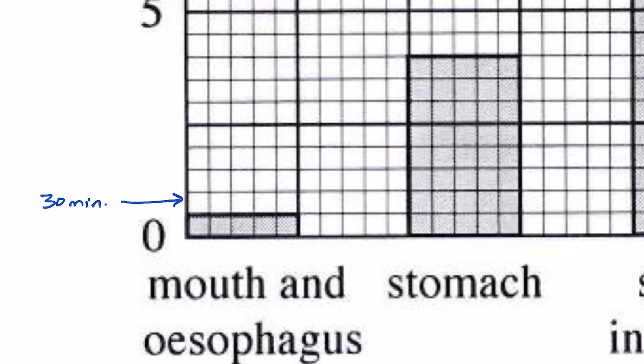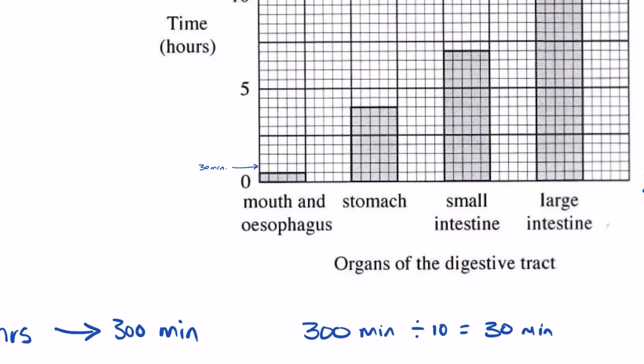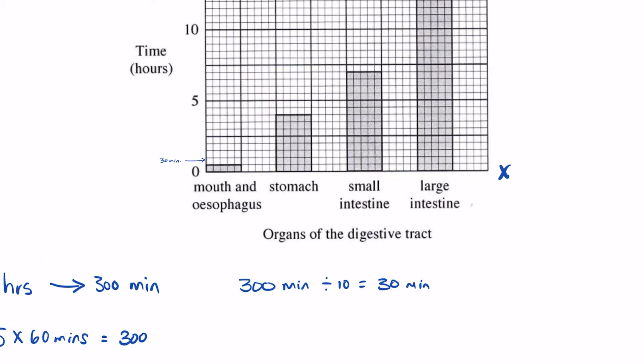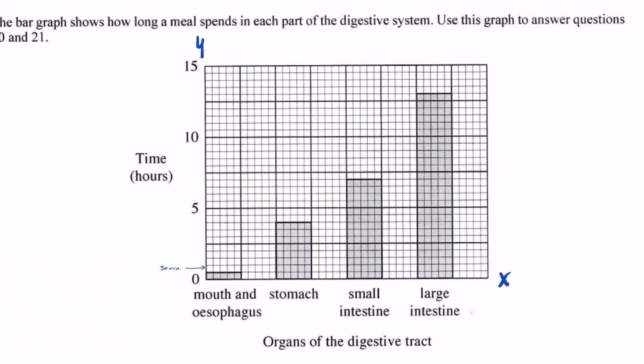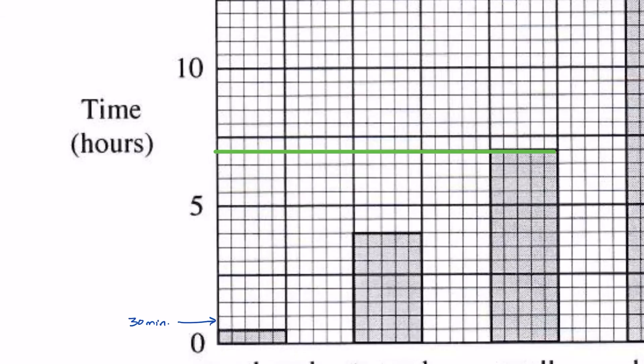Let's look at the time spent in the small intestine. If we go to the top of the bar, we can draw a line that takes us across to the y-axis. And we see it lands right about there. And now we can calculate that time. So we already know that at this point, this is five hours, and that each of these individual units represent 30 minutes.